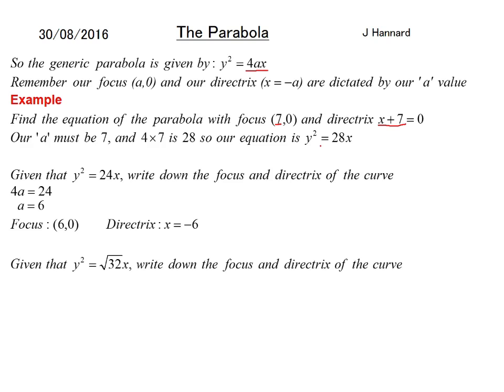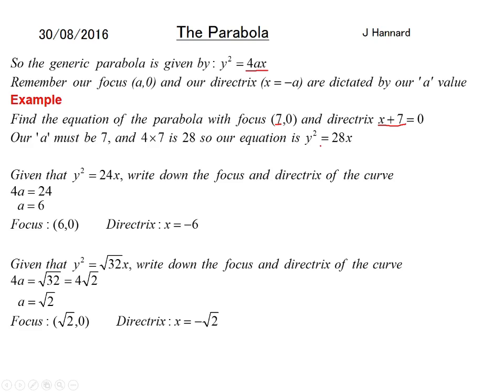Given that y squared equals root 32x, write down the focus and directrix of the curve. 4a equals root 32. But root 32 is 4 root 2 if you break it down because you've got root 16 root 2. Root 16 is obviously 4 so it's 4 root 2. And a is therefore root 2. So our focus is (root 2, 0), and our directrix is x equals minus root 2. And that is it for this first part of parabola.